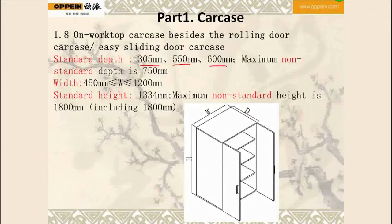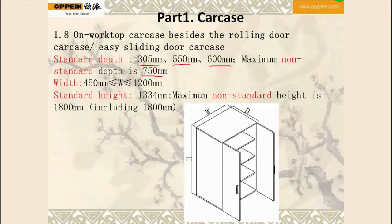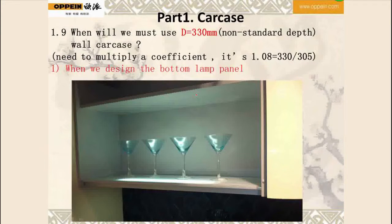The maximum non-standard depth is 750 mm and the width can range from 450 mm to 1,200 mm. The maximum non-standard height is 1,800 mm. Here I have a question: where must we use the depth of 330 mm for a non-standard depth wall carcass?